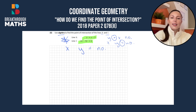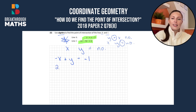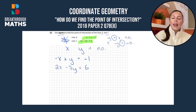Starting off with line k, we want our x on the left, so it'll become -x when it moves across. The y stays on the left as +y, equal to our number which stays on the right as -1. Line l is already in this order — it has its x, its y, and then equals its number. So we've got step 1 done.